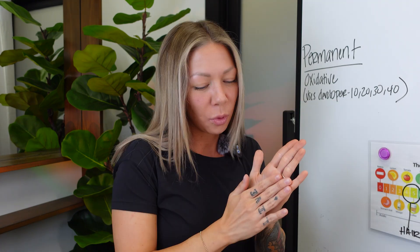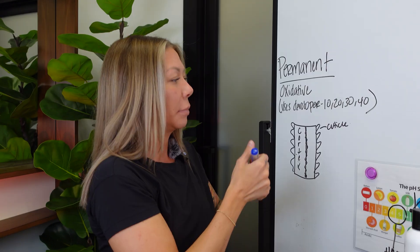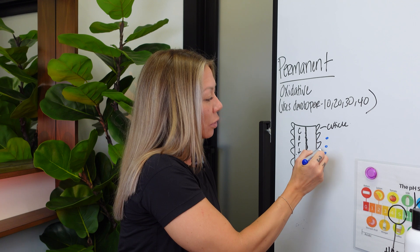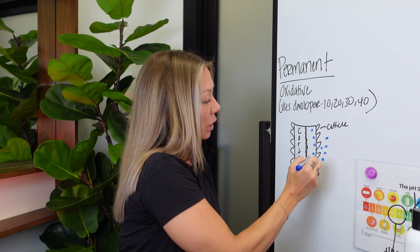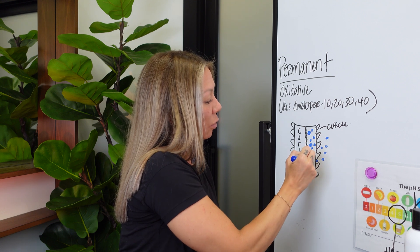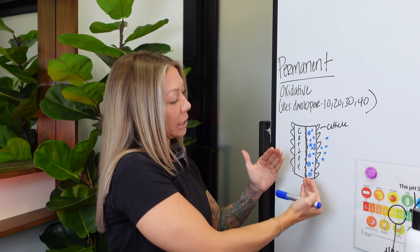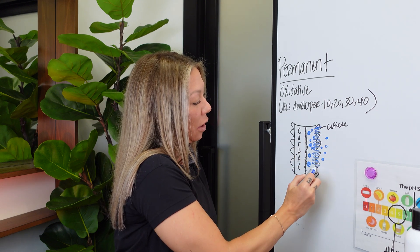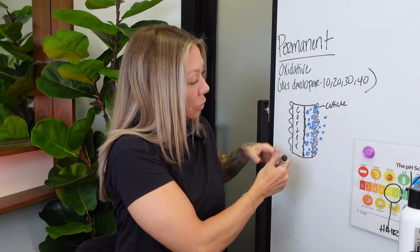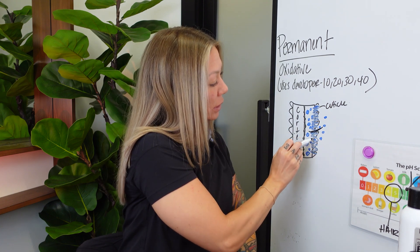Permanent hair colors contain uncolored dye precursors called aniline derivatives. On their own they're colorless — like little ghosts. When you mix these uncolored dye precursors with a developer or hydrogen peroxide, they go through a chemical reaction and turn into hair color molecules inside the hair shaft. They're able to enter the little doors and glide through like a ghost, then start turning bigger and forming a home in the cortex because they're activating with the developer. This changes the color of the hair because they've turned into bigger molecules — they're trapped. They cannot go back out through the gap — they're too big — and that locks in the color, making it permanent.